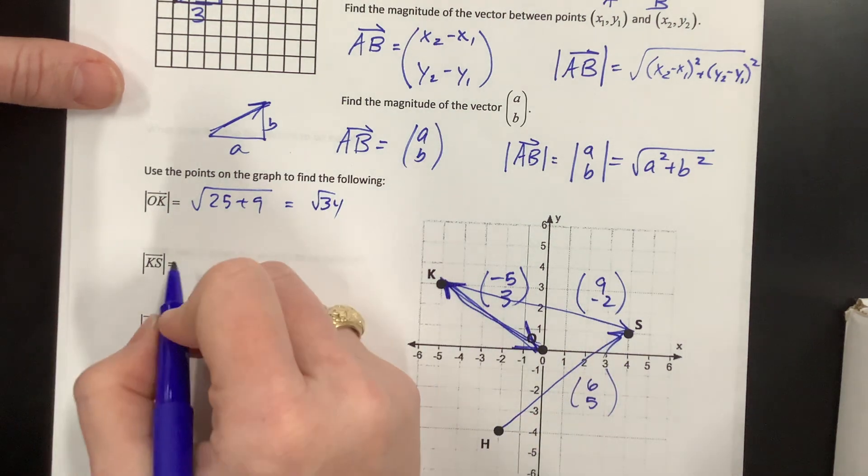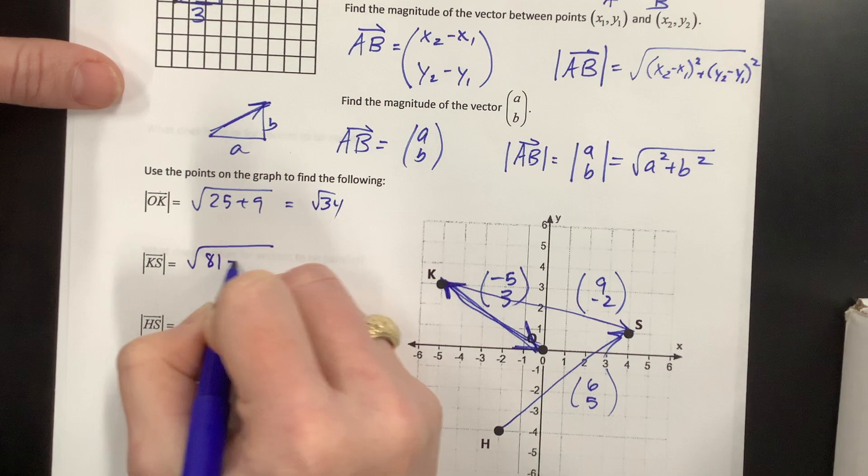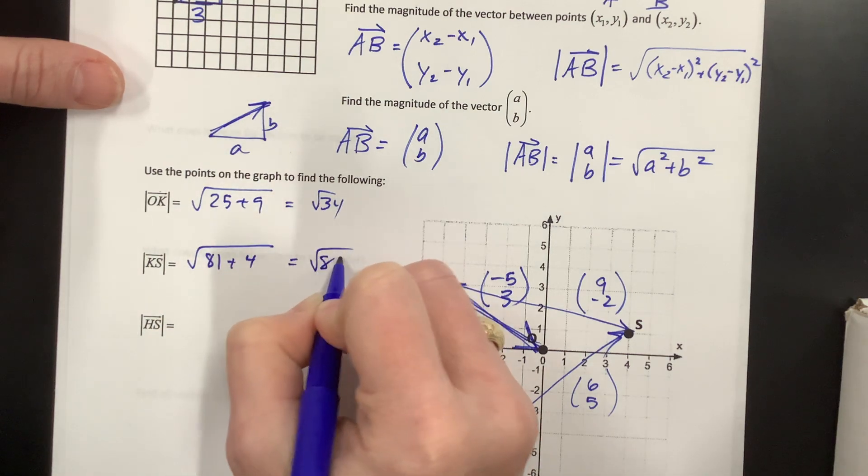KS we said was 9, negative 2, so this is the square root of 81 plus 4, which is the square root of 85.